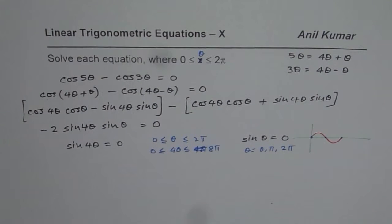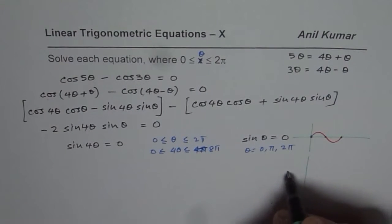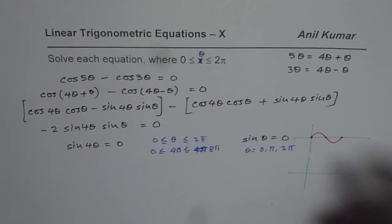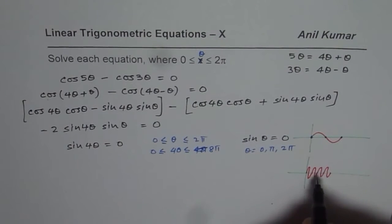When we're talking about sin 4θ, within the interval 0 to 2π we have 4 cycles. We have 1 cycle, 2 cycles, 3 cycles, and 4 cycles.